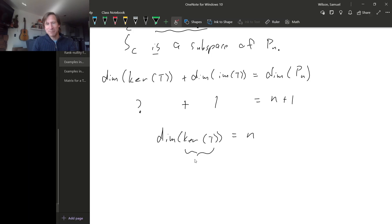The dimension of the kernel of this map is just N. And remember, the kernel of the map, that was S sub C, that was the subspace that we were looking for. So the dimension of this subspace is actually just N.